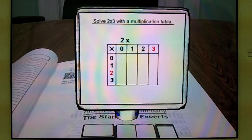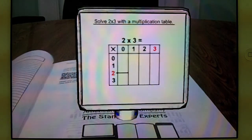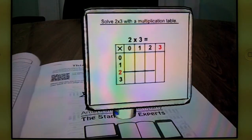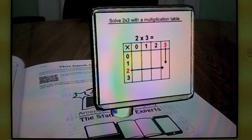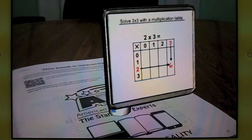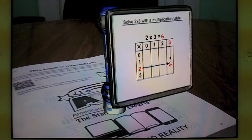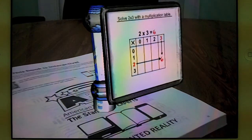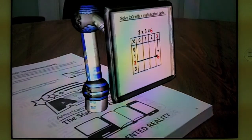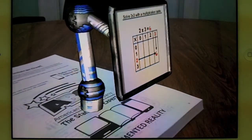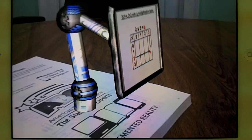Augmented Reality. What is it? Simply put, augmented reality is a way to see virtual objects in a real-world environment through a device's camera.